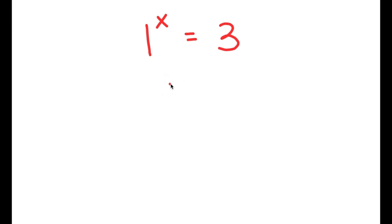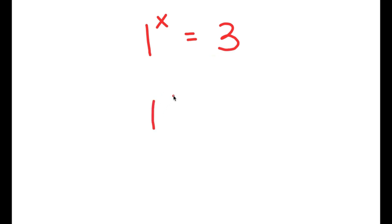In this equation, I have 1 to the power of x is equal to 3. This might seem like an impossible equation, right? Because how can 1 be to the power of any number and equal to 3, if 1 to the power of even a million is still equal to 1?